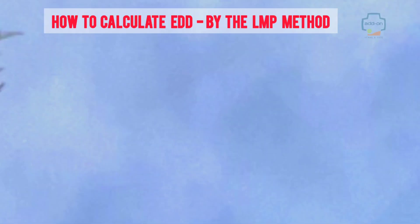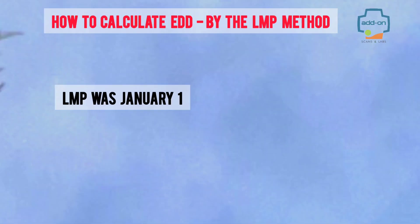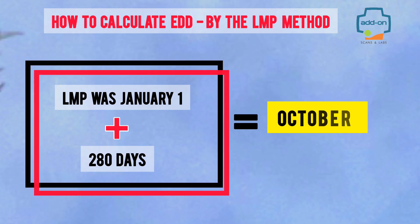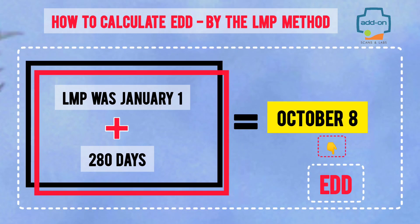For example, if your LMP was January 1st, just add 280 days, which brings you to October 8th. That will be your EDD.